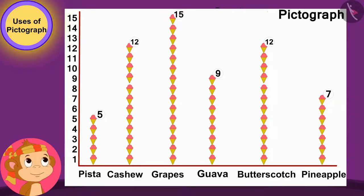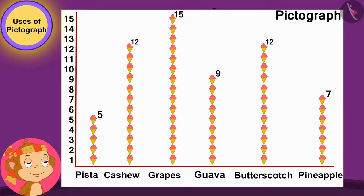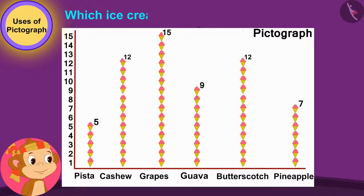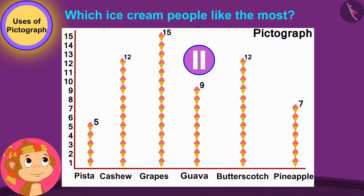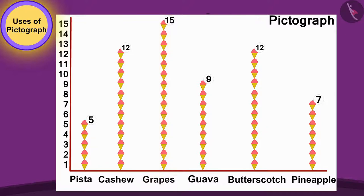Babban is trying to find out which ice cream people like the most by looking at his pictograph. Children, can you see the pictograph made by Babban and tell which ice cream people like the most? You can stop the video and find the answer. Yes, the grape ice cream line is the tallest, so we can easily find out that grape ice cream is liked by most people.